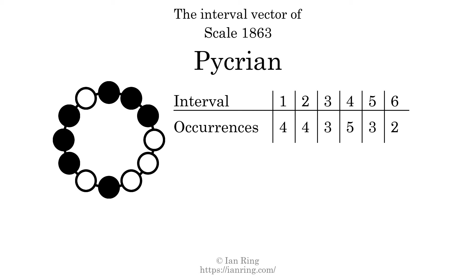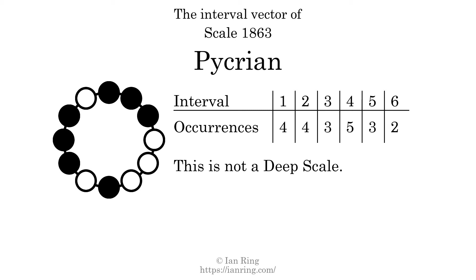There are two intervals with the size of six semitones. Each interval does not appear in this scale a unique number of times, so this is not a deep scale.